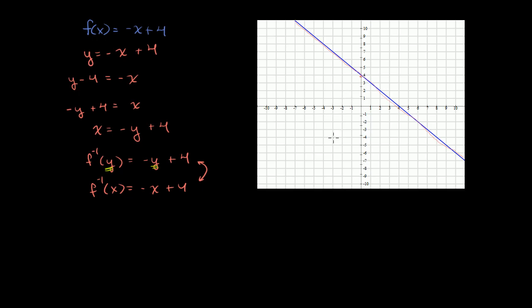So where's the line y equals x here? Well, the line y equals x looks like this. And negative x plus 4 is actually perpendicular to y is equal to x. So when you reflect it, you're just kind of flipping it over, but it's going to be the same line. It is its own reflection.